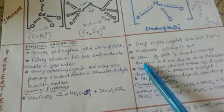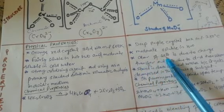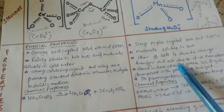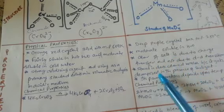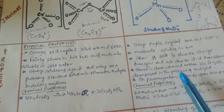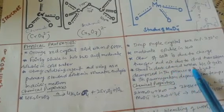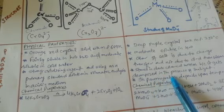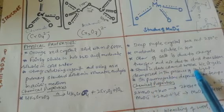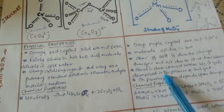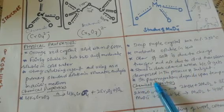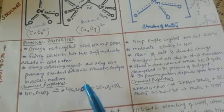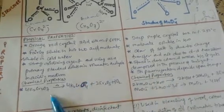The color of these salts is due to charge transfer and not due to d-d transition. Potassium permanganate is stored in dark-colored bottles because it decomposes in the presence of sunlight. Its properties are dependent on temperature.